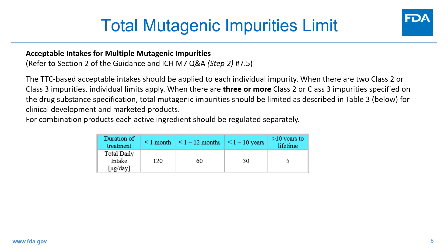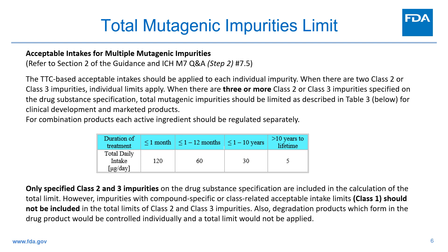The first topic is the total mutagenic impurity limit. The TTC-based acceptable intakes should be applied to each individual impurity. When there are two Class II or Class III impurities, individual limits apply. When there are three or more Class II or Class III impurities specified on the drug substance specification, total mutagenic impurities should be limited as described in Table 3 for clinical development and marketed products. For combination products, each active ingredient should be regulated separately. Only specified Class II and Class III impurities on the drug substance specification are included in the calculation of the total limit. However, impurities with compound-specific or class-related acceptable intake limits (i.e., Class I) should not be included in the total limits. Also, degradation products which form in the drug product would be controlled individually and a total limit would not be applied.